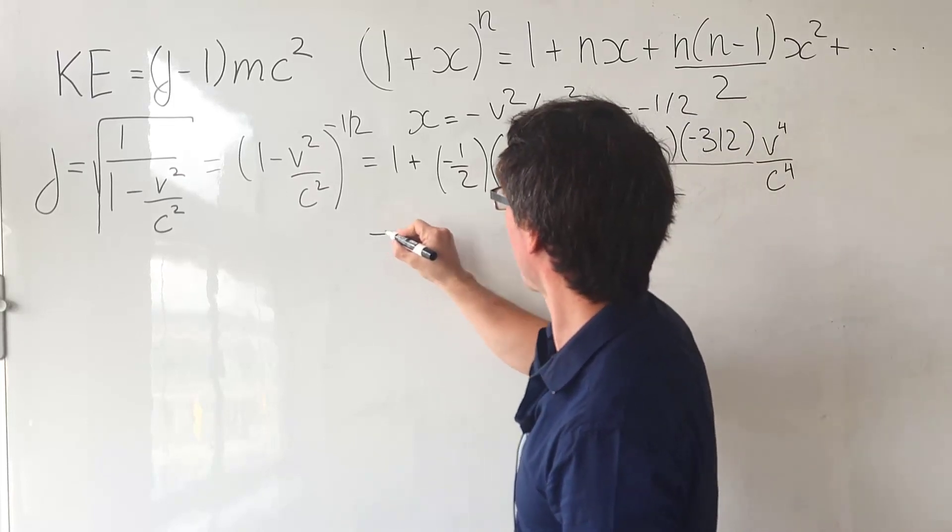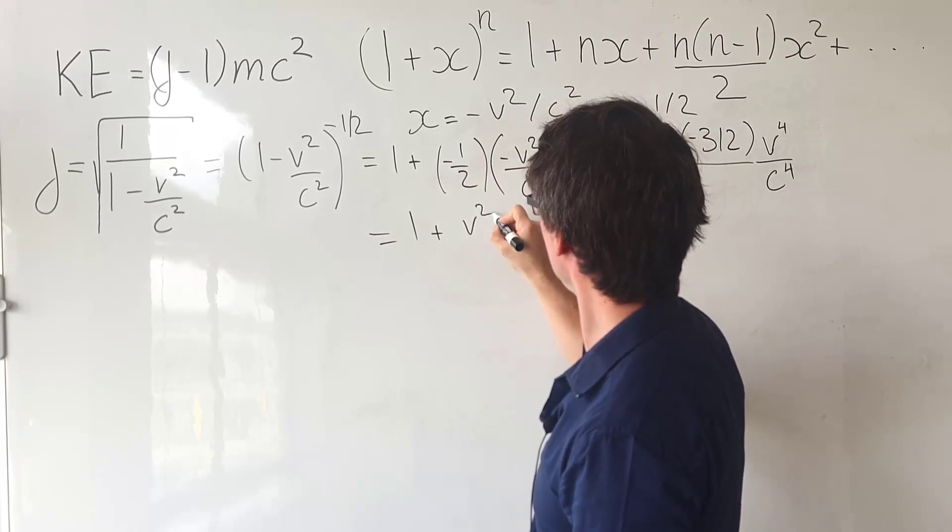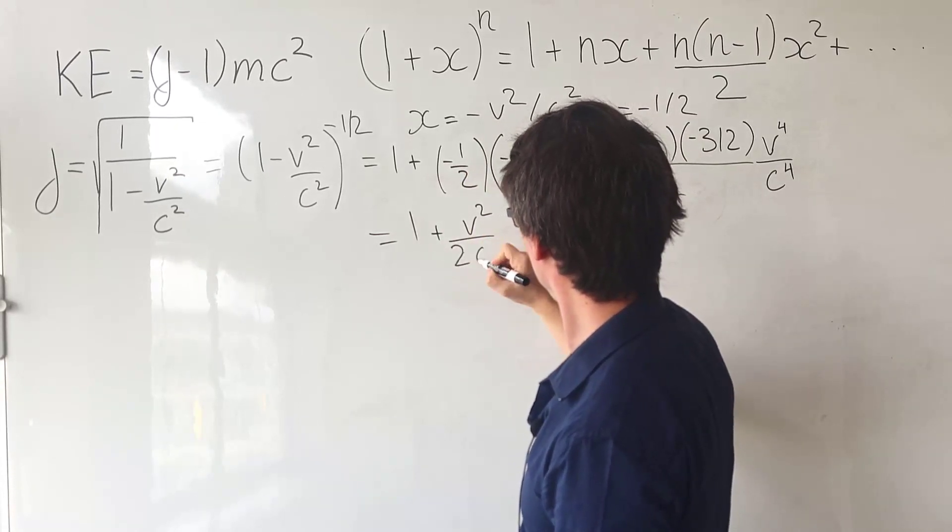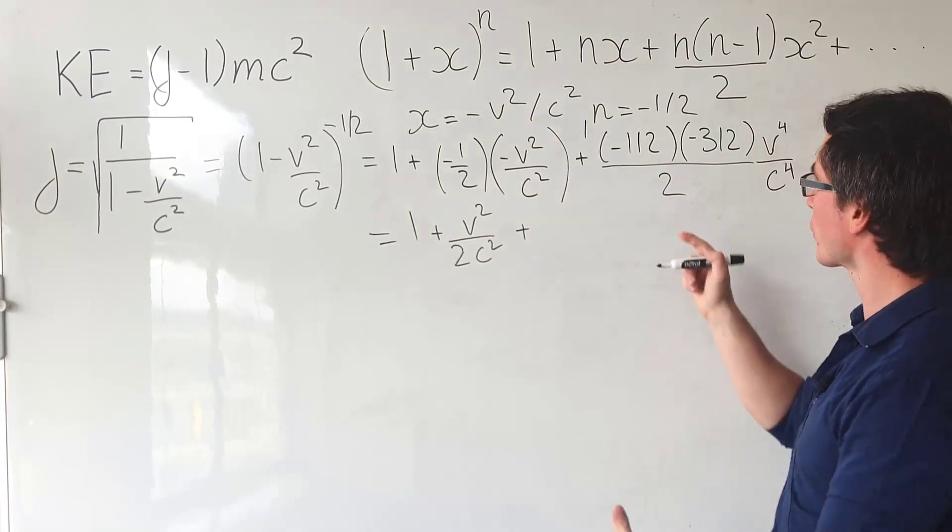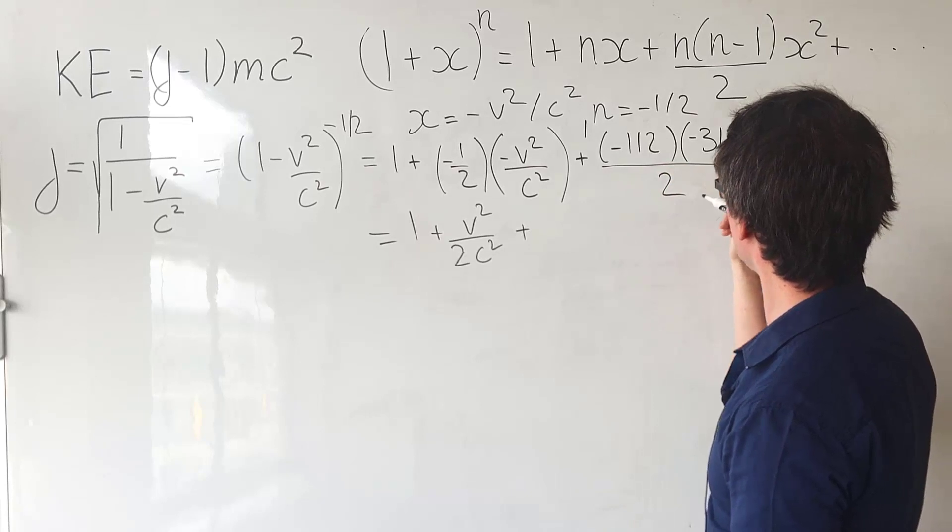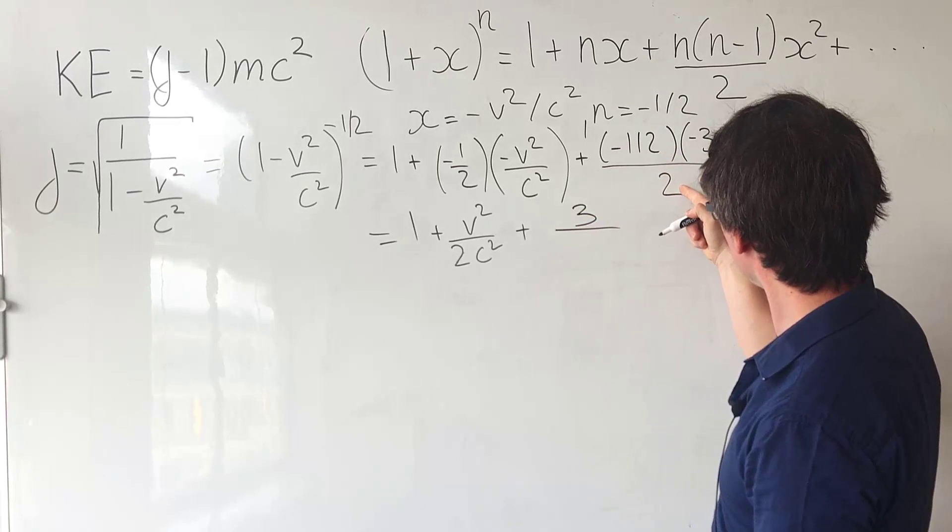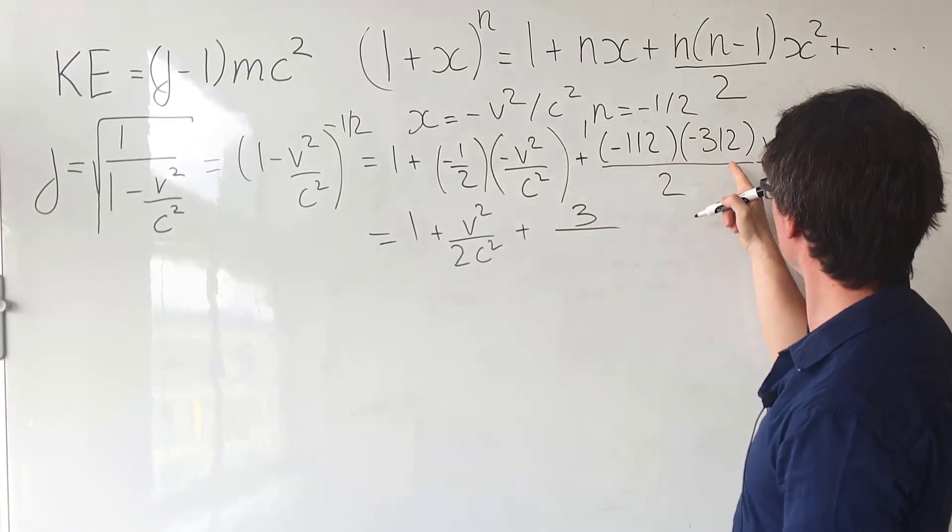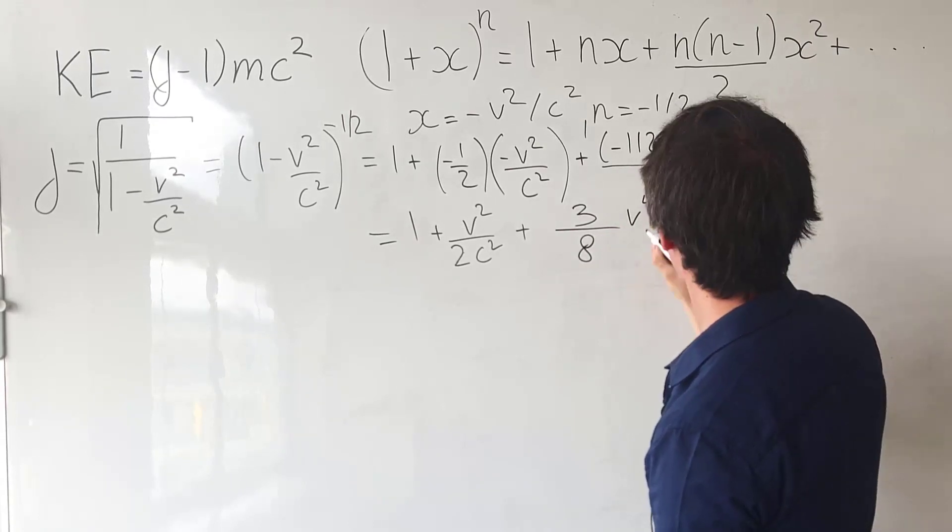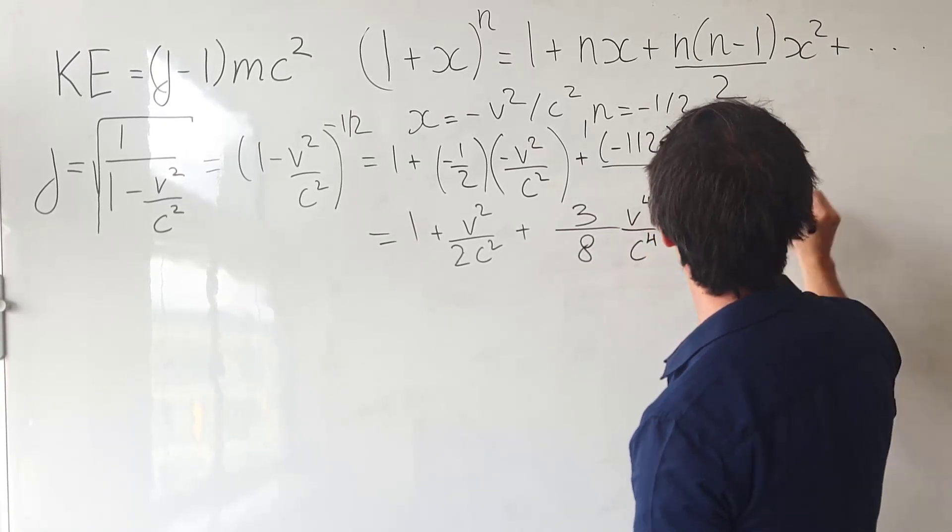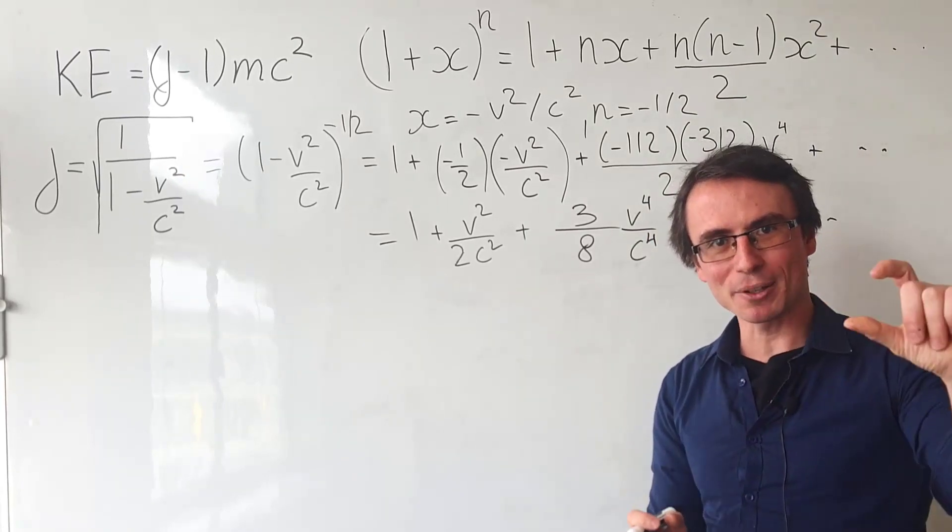Let's tidy this expression up and what we're going to get is one plus v squared over two c squared. The two negative signs are going to give us a positive and what we'll be left with is three over eight v to the power of four divided by c to the power of four. These are the first few terms of the binomially expanded gamma factor.